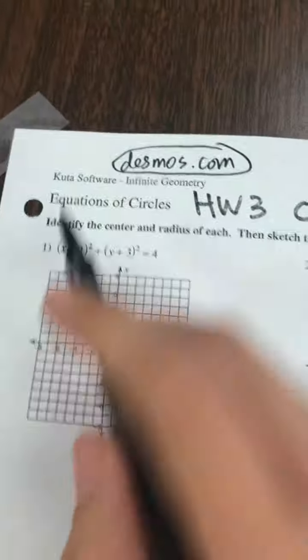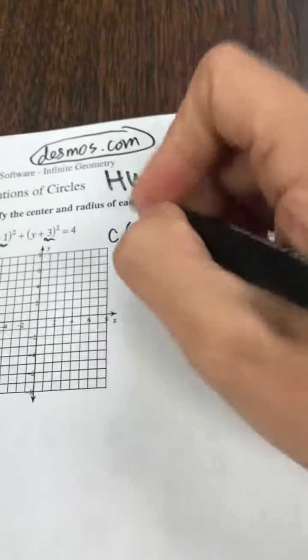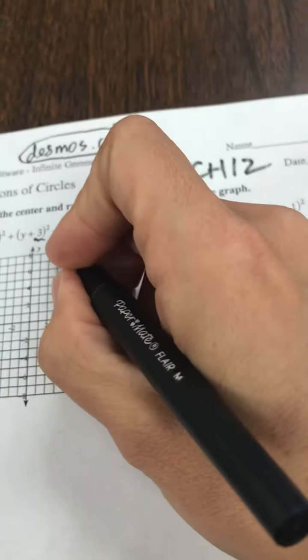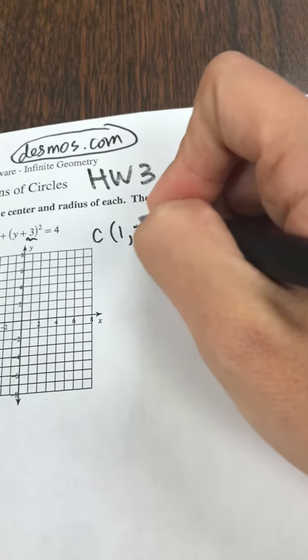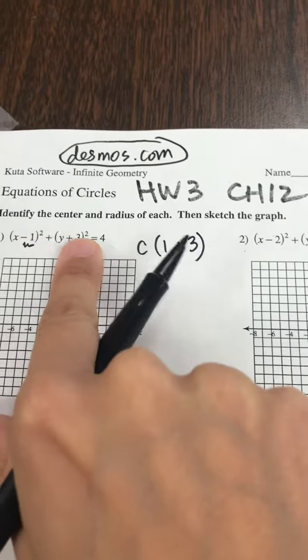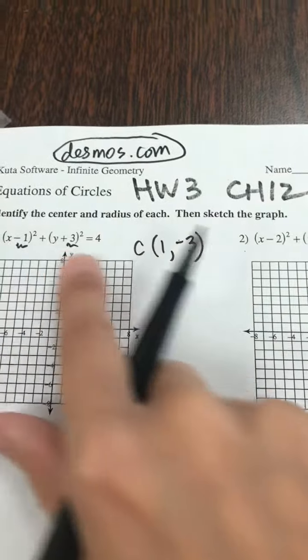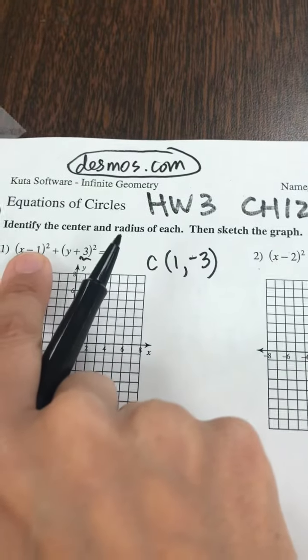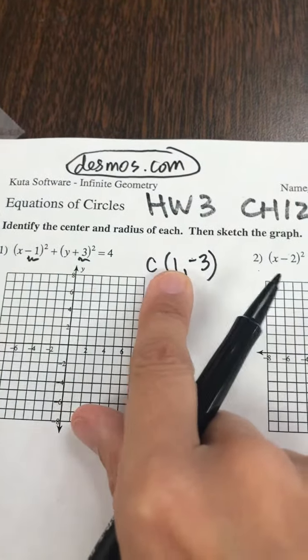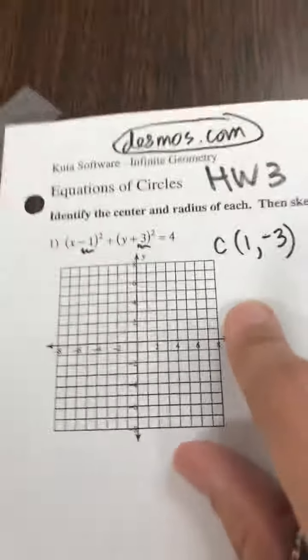There's a relationship when it looks like this, in this form, between the center of the circle. So we notice that when we type this into Desmos, the center of the graph happens to be at this coordinate. And so if it looks like this, that's where the center ends up being. The relationship is that if we see a positive number here, we see a negative number, or vice versa. If we see a positive, we see a negative. And also the number is the same.